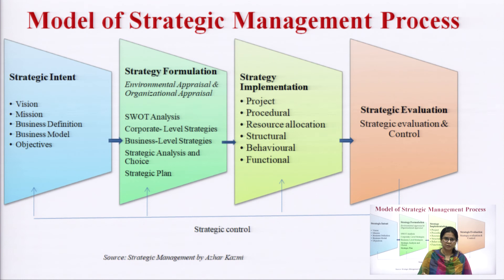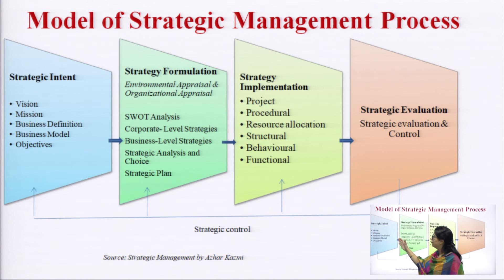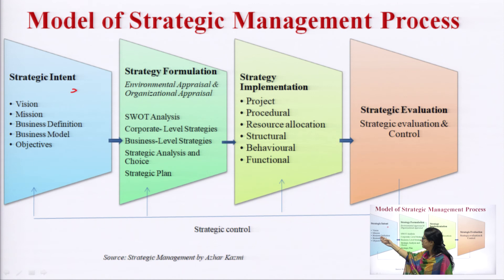When we talk about strategic management as a process, it is an ongoing process and if there is any loophole in between, we are going to rectify it. The first step is strategic intent, which is all about your vision, mission, business definition, business model, and objective.